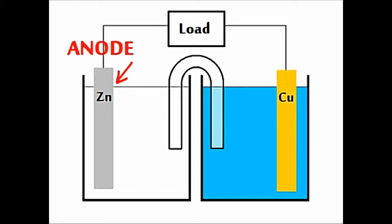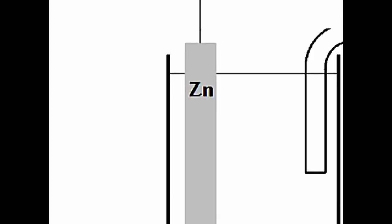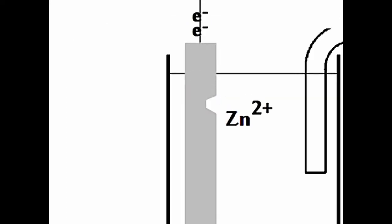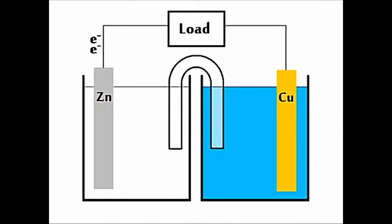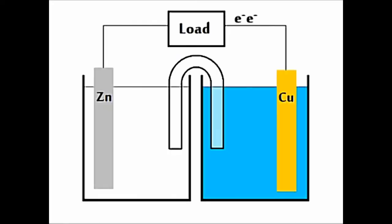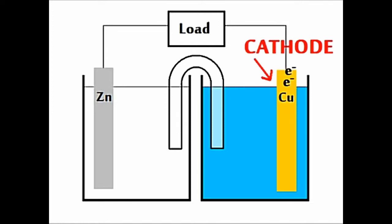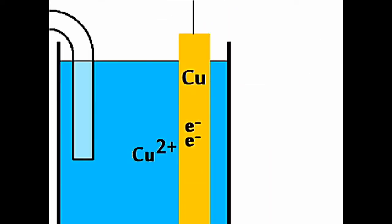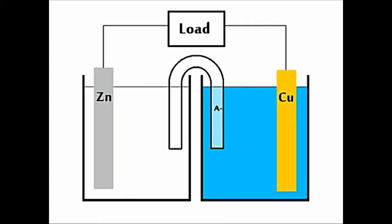We start at the anode. Electrons are lost there, and go through the wire, and through the load on fire. They enter the cathode, and reduce the cations, and the anions go through the salt bridge back to where?